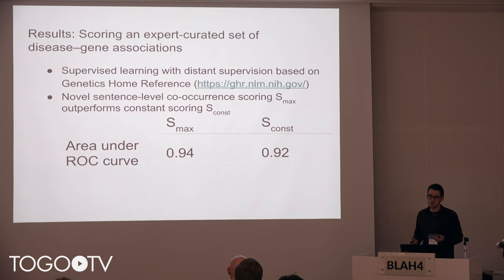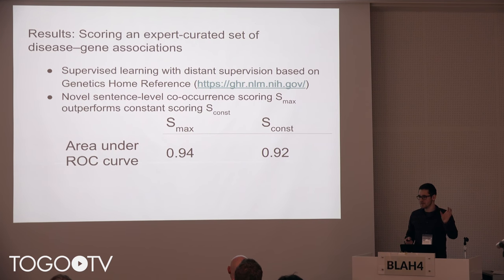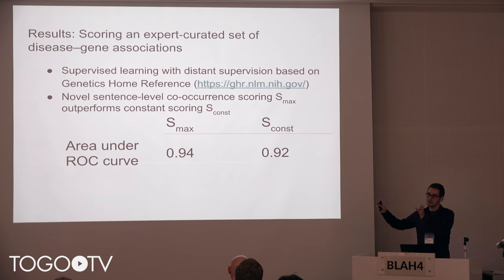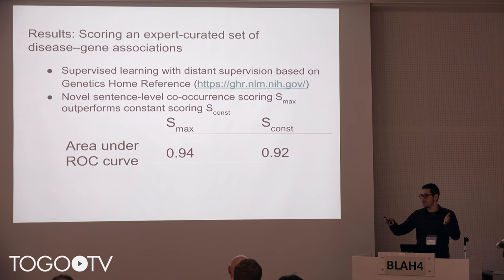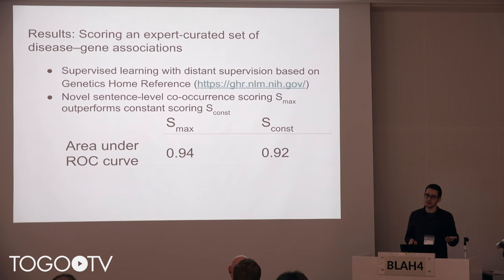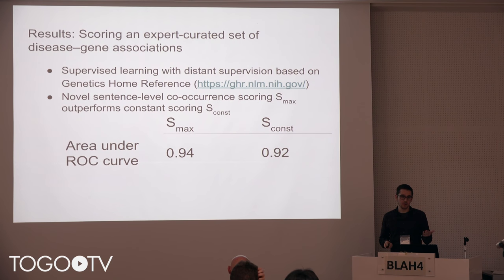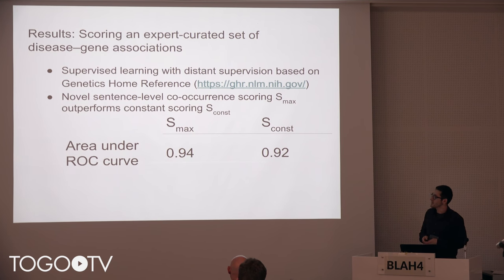The approach we used here is called distant supervision. We didn't have a dataset that assigns negative or positive labels to sentences, which would need to be manually curated. Instead, we used distant supervision: we have a knowledge base of associations between genes and diseases — in our case from the Genetics Home Reference — and whenever we find a sentence co-mentioning a gene and disease that appears in the knowledge base, we assume it is a positive sentence. This gives a rather noisy dataset where labels can be wrong, but it provides hundreds of thousands of sentences, and we are positive that our model is still able to pick up subtle signals in it.